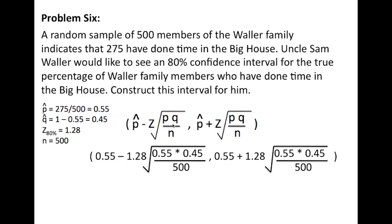Since we don't know p and q, we will plug in p hat and q hat value. So we have p hat minus our z score times the square root of p hat q hat over n, and p hat plus our z score times the square root of p hat q hat over n. Keep in mind that this is simply a p hat value plus or minus a z score value times the standard deviation of the distribution.